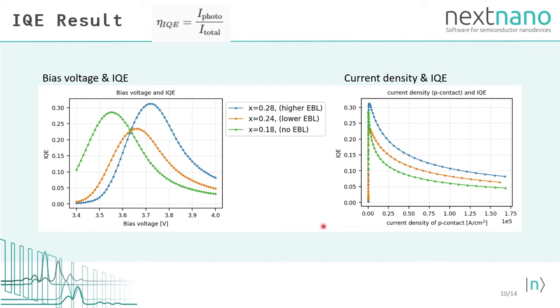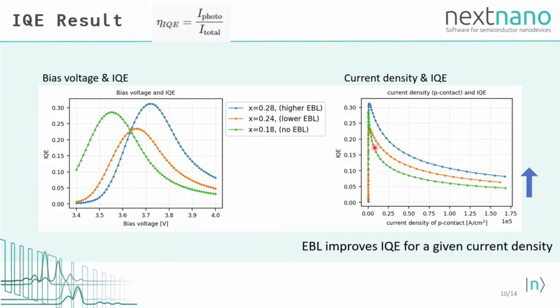Also, the right graph shows the relation between the current density and IQE. Here we can see that the introduction of blocking layers improves IQE for a wide range of current density. Next, we will analyze this improvement in detail.